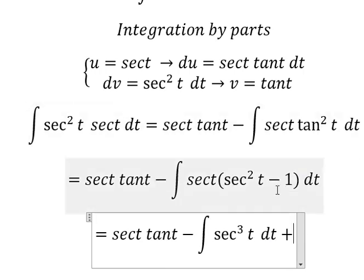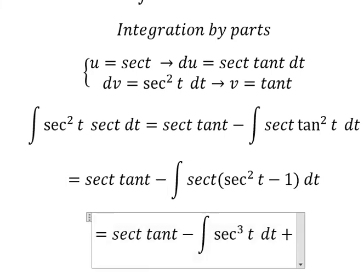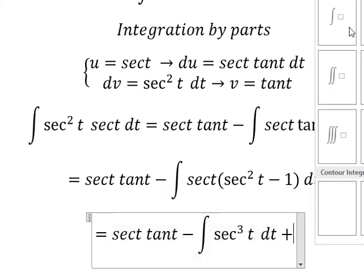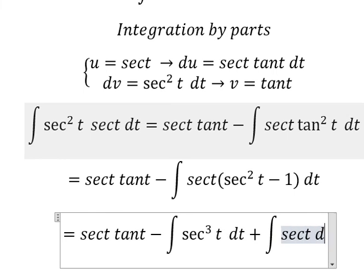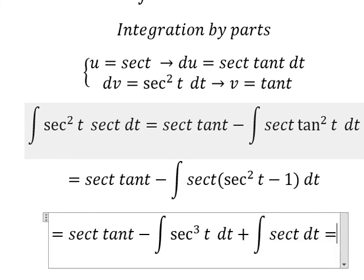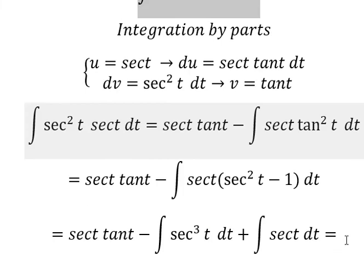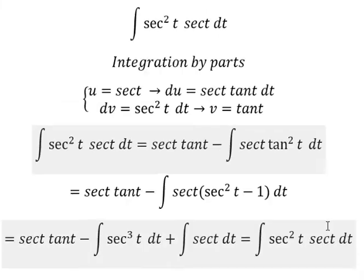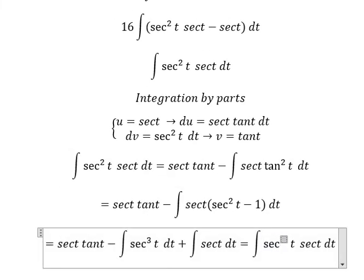Because we have negative times negative, we get a positive term plus the integral of sec(t) dt. The integral of sec(t) is ln|sec(t) + tan(t)|. And this expression can be simplified in terms of the integral of sec³(t).